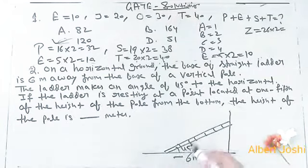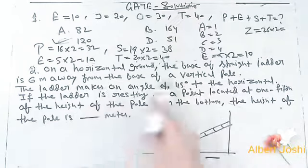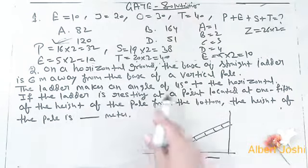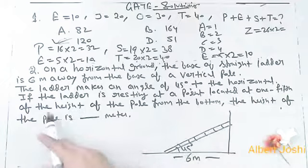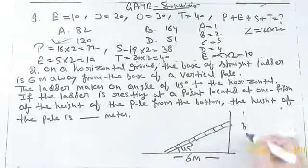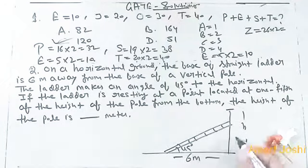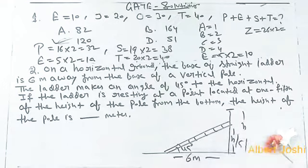There is a ladder, and the ladder is making 45 degrees to the horizontal. The ladder is resting at a point located at one-fifth of the height. So let the total height equal h, and this is h upon 5.